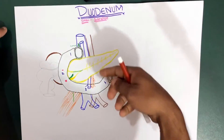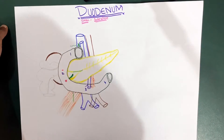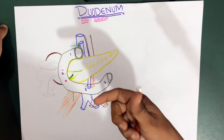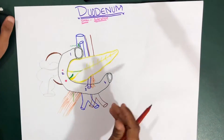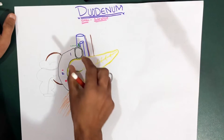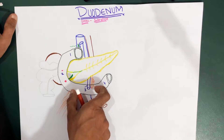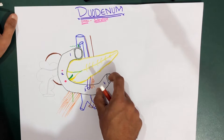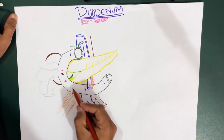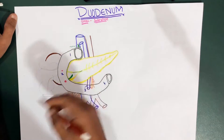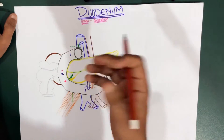Before talking about the duodenum, I'm going to name all the structures in this diagram so it will be easy to discuss the relations and its parts. The duodenum is divided into four parts: this is the first part, this is the second part, this is the third part, and this is the fourth part. This long loop you can see is the duodenum.